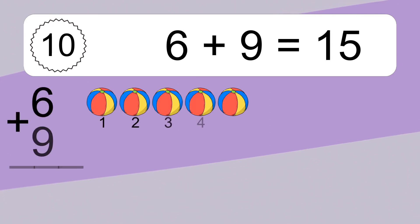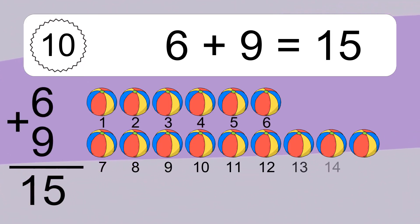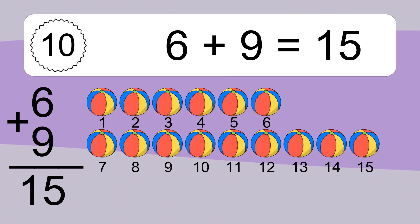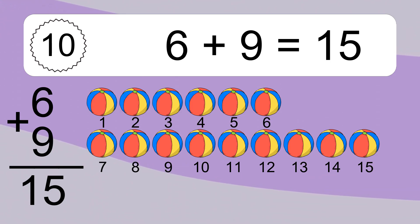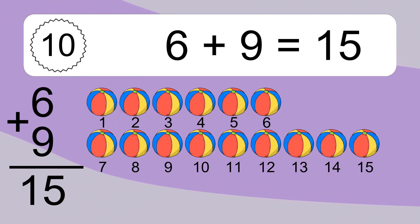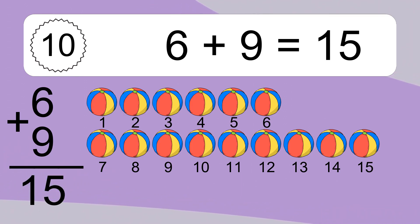6 plus 9 equals what? 6 plus 9 equals 15. Let's count it. 1, 2, 3, 4, 5, 6, 7, 8, 9, 10, 11, 12, 13, 14, 15.